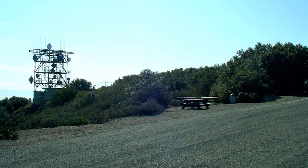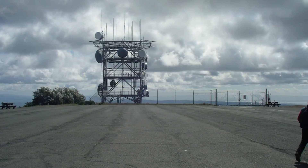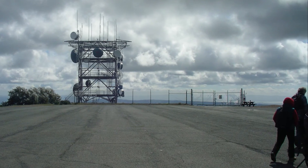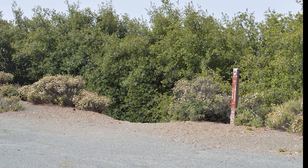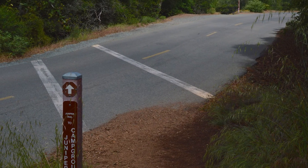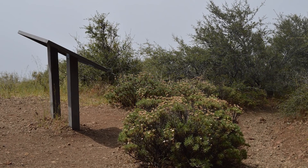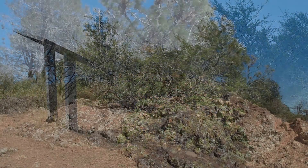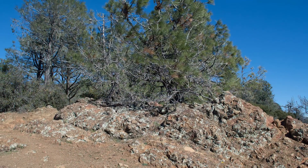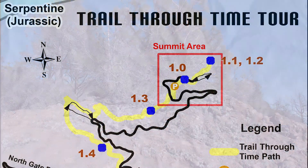Head down to Lower Summit parking lot again. Go beyond the picnic area and the restrooms, heading west, until you reach the start of the Juniper Trail. Follow that for a little less than half a mile until you reach stop 1.3. It's a scenic spot with a sign all about the volcanic rock that emerged from the ocean — Greenstone, or pillow basalt.